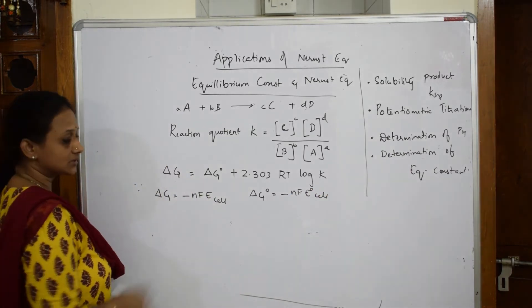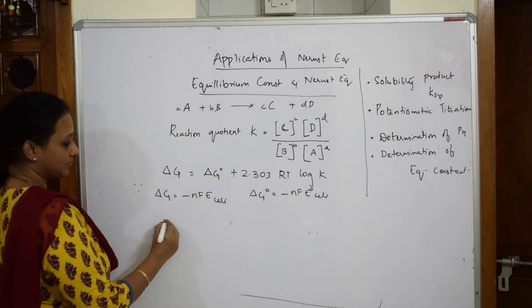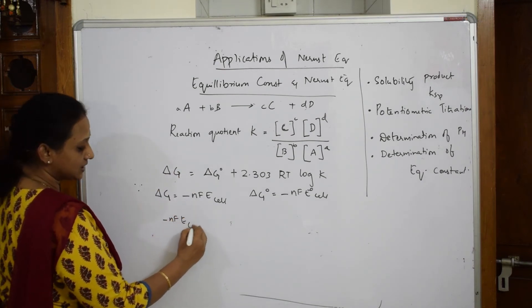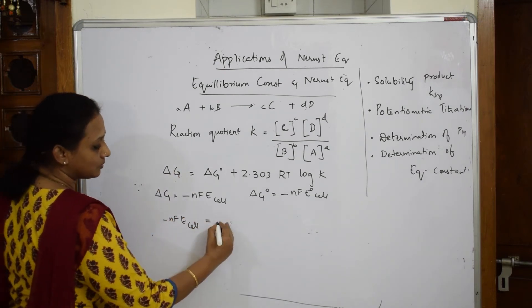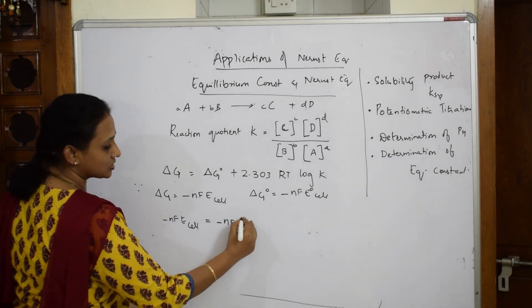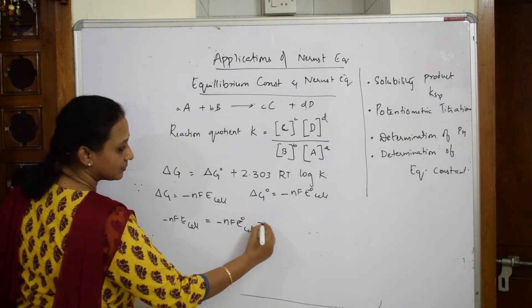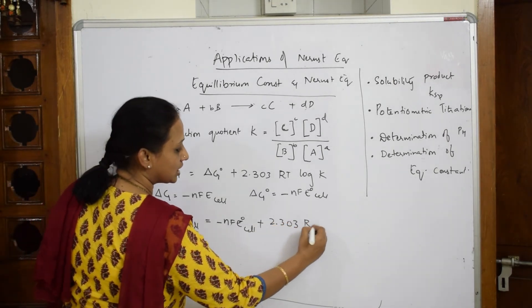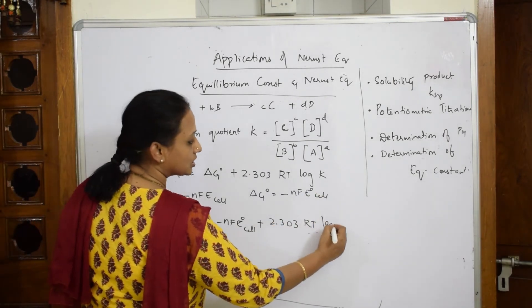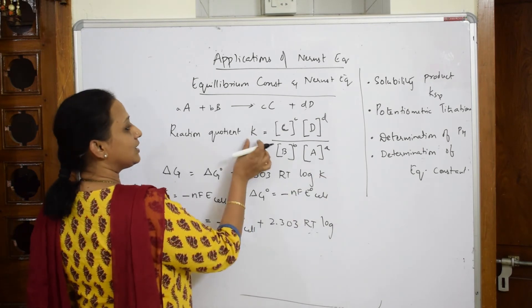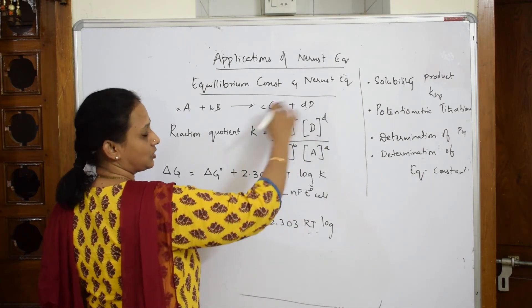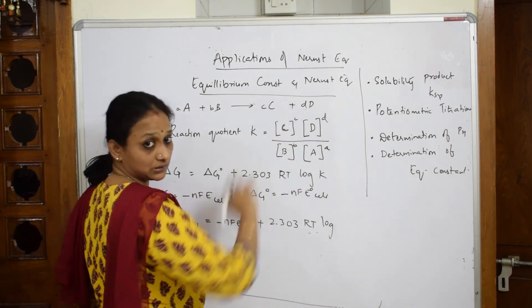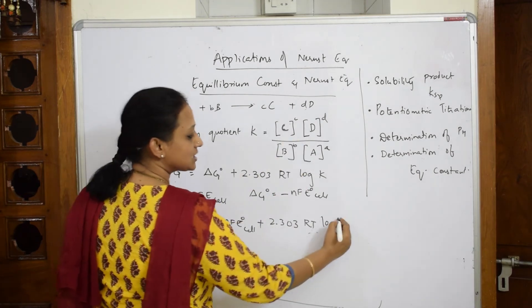Now substitute these two values in this. Minus NF E cell is equal to minus NF E naught cell plus 2.303 RT log K. K value is nothing but this whole for this reaction, this is a quotient. Instead of writing all these I am going to write K.